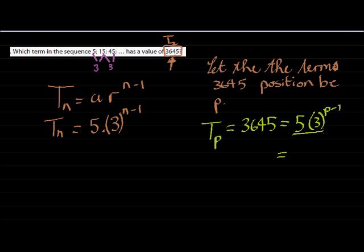Divide both sides by 5. Remember my unknown is in the exponent, so first I need to get my power on its own. 5 goes into 3645 729 times. So this side I've got 729 and on this side I've got 3 to the power of p minus 1.